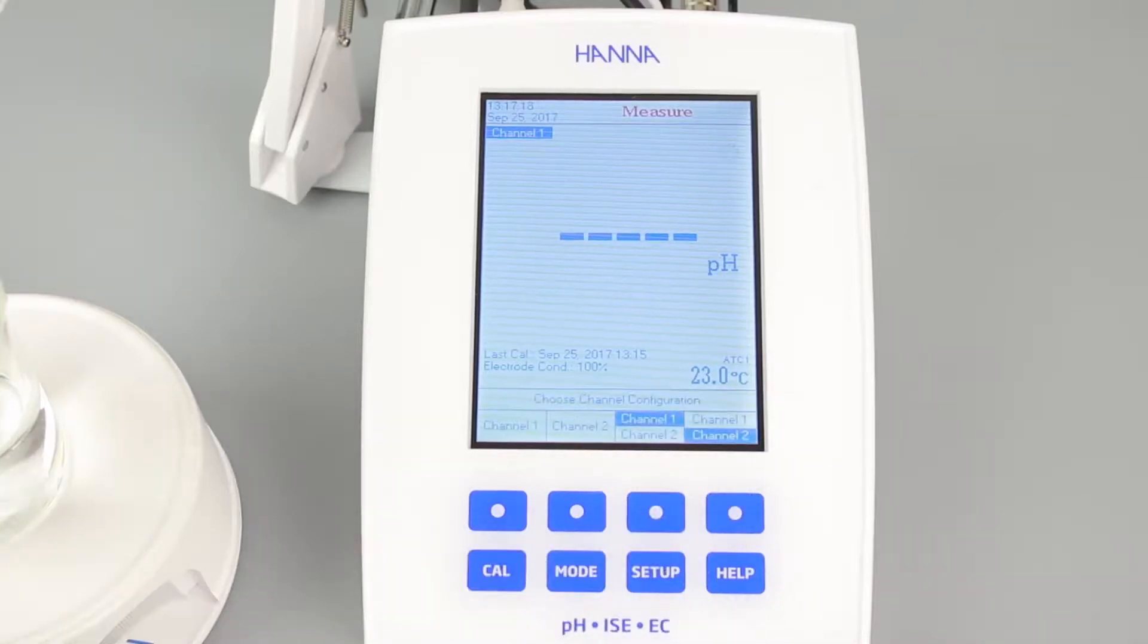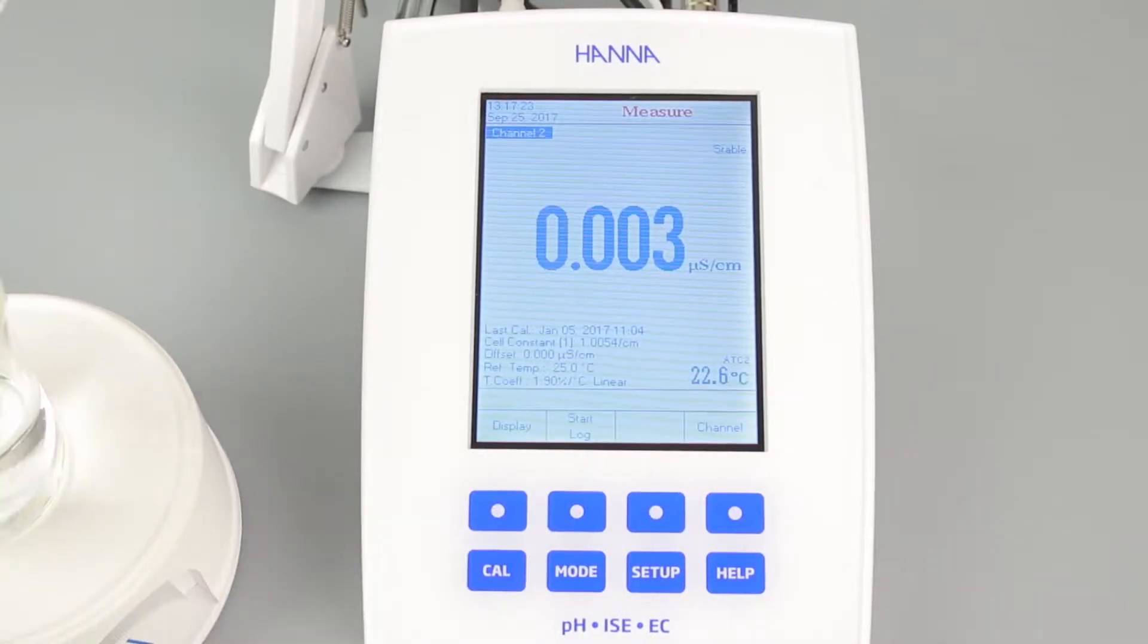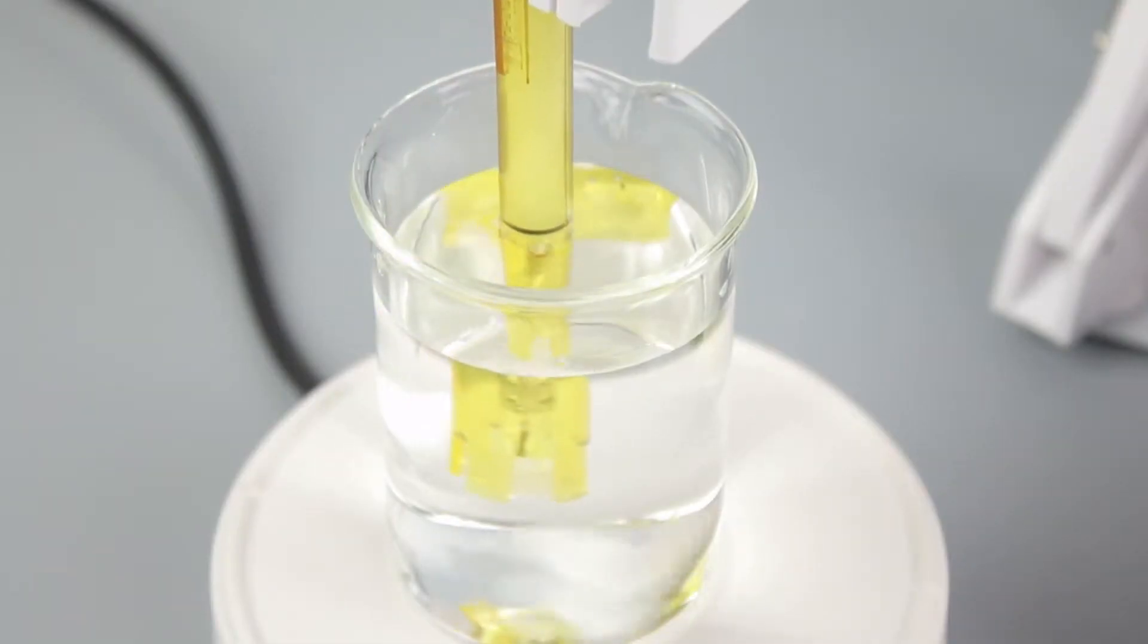To perform a conductivity calibration, access the EC channel by pressing channel, then pressing channel 2. Now press CAL to enter EC calibration mode. Submerge the EC probe in the standard of your choice. Be sure to rinse with standard before submerging the probe for best results.